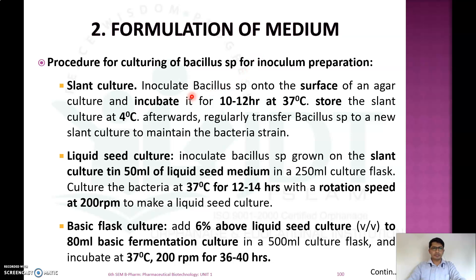Different methods for preparation of inoculum are: slant culture method, liquid seed culture method, and basic flask culture method. This is performed before the production process to obtain a sufficient number of microorganisms. In slant culture, Bacillus species are inoculated onto the surface of agar culture and incubated for 10 to 12 hours at 37°C, then stored at 4°C.